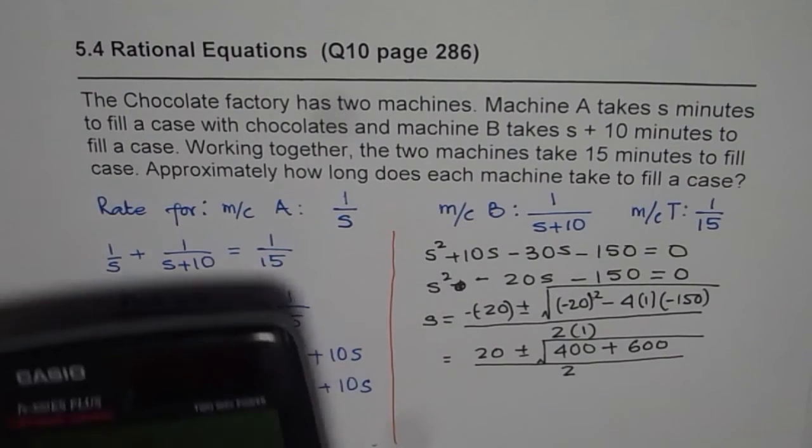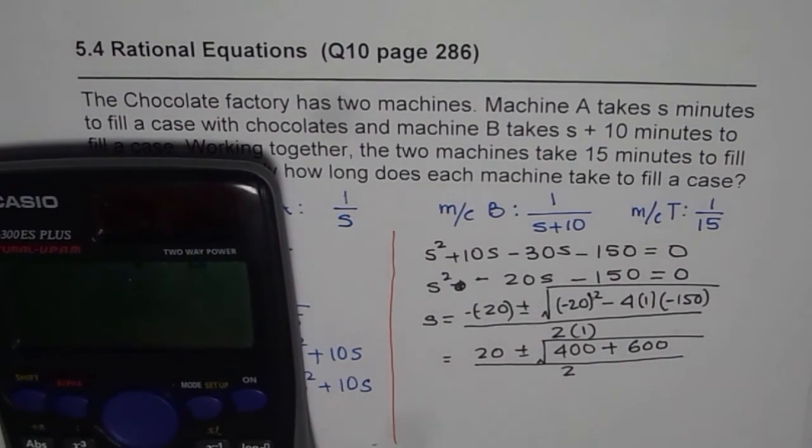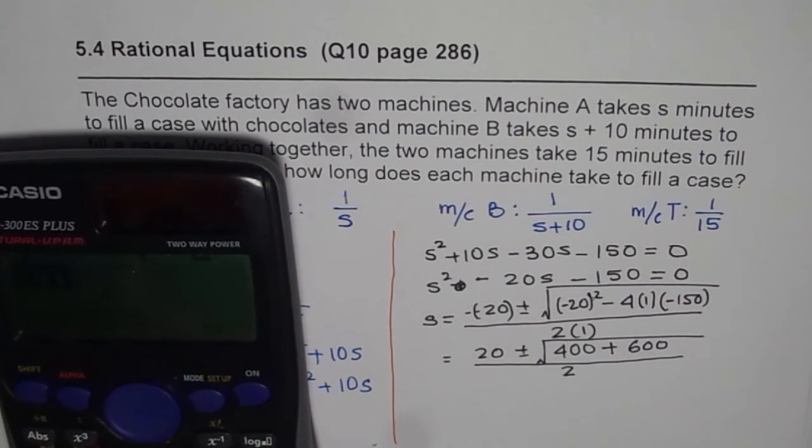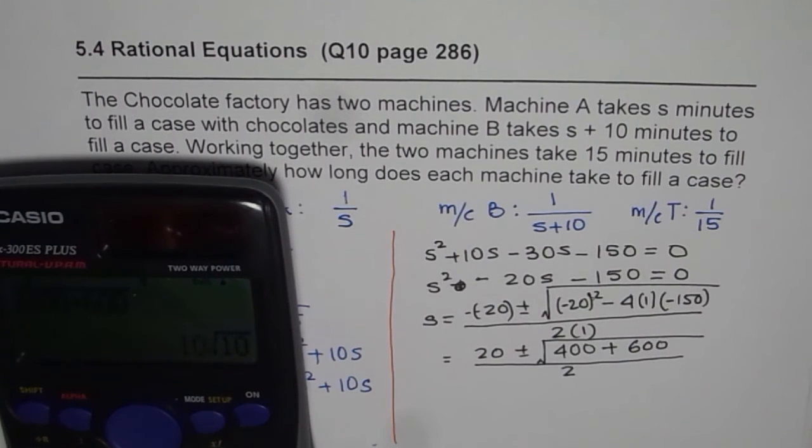So let us use the calculator now. So we will use square root of 400 plus 600 which is equal to 10 square root of 10. Let us write it in decimals, 31.62. Now if I subtract 31.62 from 20 I will get negative number which is not valid. So we will use the positive number. So we will add 20 to this.